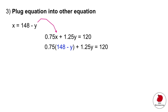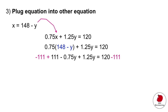Multiply the expression out and then solve for y on the left side. Subtract 111 from both sides — remember what you do on the left you have to do on the right. That ends up giving us 0.5y equals 9. Divide both sides by 0.5, and that gives you y equals 18.